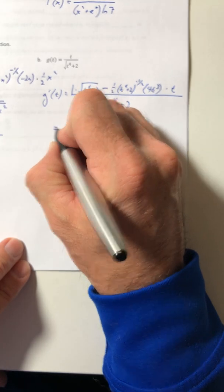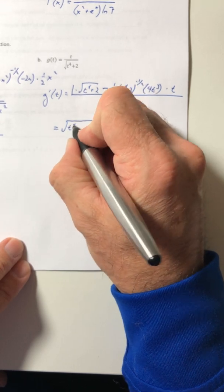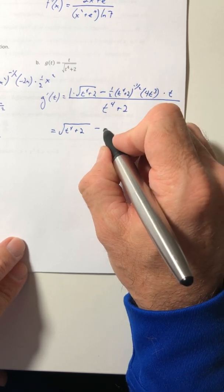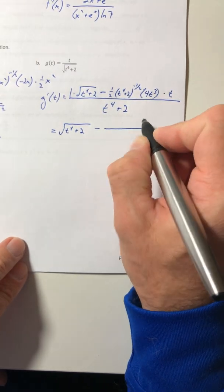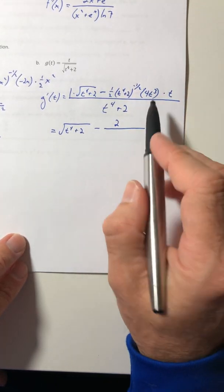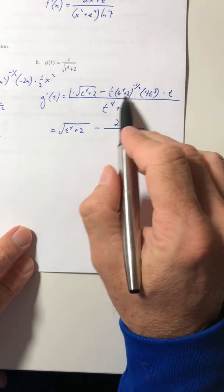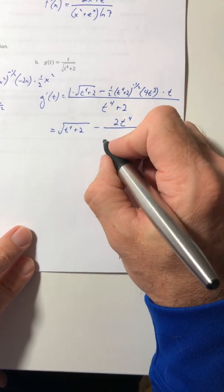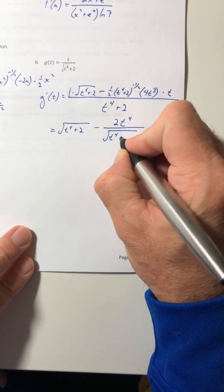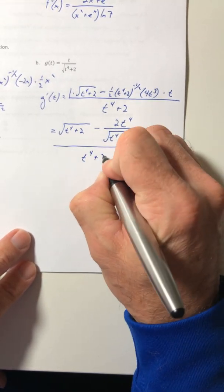Okay, so let's clean this up a little bit. So root t to the fourth plus two, and then minus the one half and the four become two. t to the third times t is t to the fourth. And then the negative exponent, I'm going to flip it and change it back to a radical.